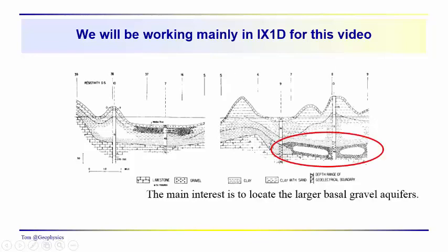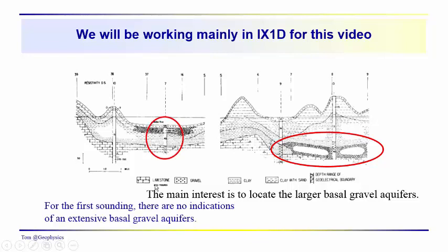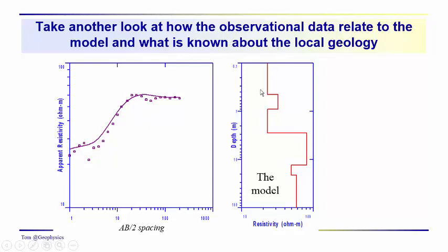We're going to be working with IX1D. Froelich, of course, is interested in these deeper gravel aquifers. We'll see a shallow aquifer here, and there are no indications of the drift fill gravels in this particular area. We're seeing a very nice high resistivity shallow aquifer, which appears that it could be rather extensive across the area to the north. Just as a reminder of how the observational data — these data points over here — relate to the model, what we know about the local geology: this is the model window over here.